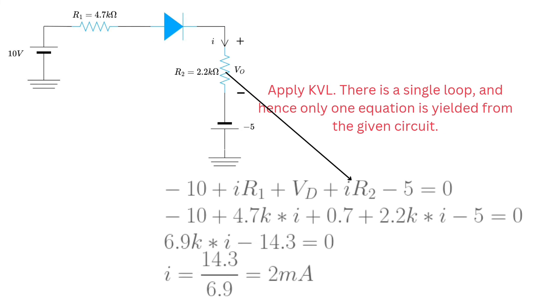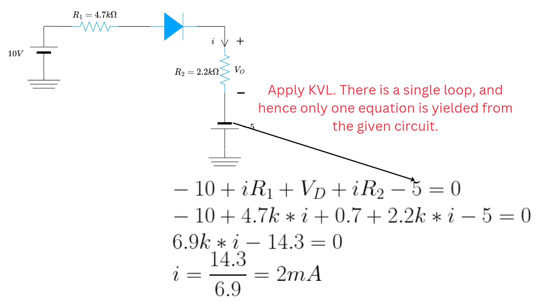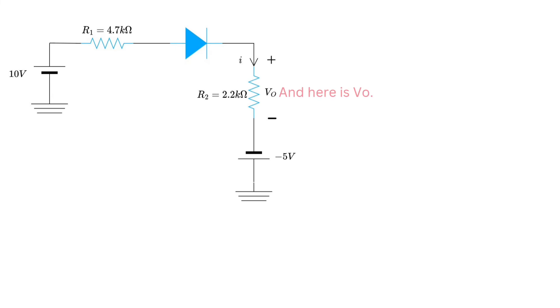Similarly, this is I R2 and in the last minus 5 volt and V0 is calculated as here.